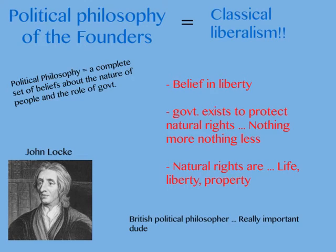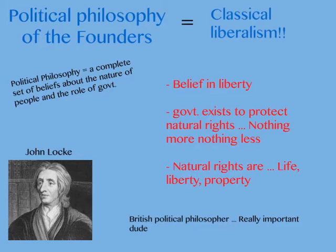The political philosophy of the Founding Fathers was called classical liberalism. A political philosophy is a complete set of beliefs about the nature of people and the role of government — what government should and shouldn't do. According to the classical liberals, they had a basic belief in liberty: that government exists to protect natural rights — nothing more, nothing less — and those natural rights are life, liberty, and property. John Locke is the person who came up with the idea of natural rights, and he was a really important British political philosopher.